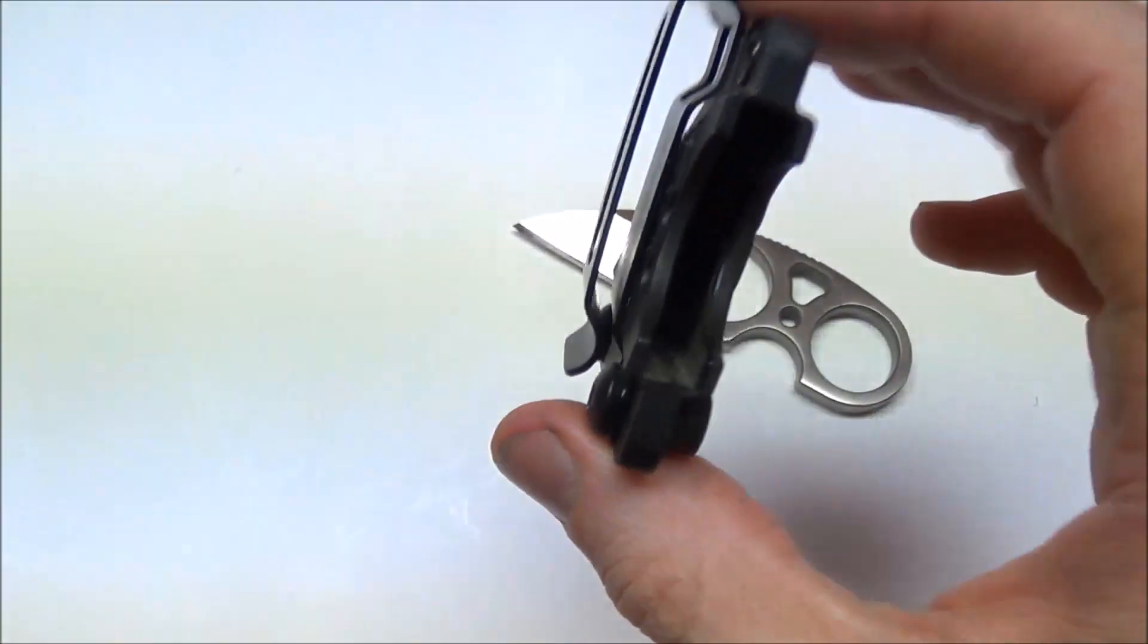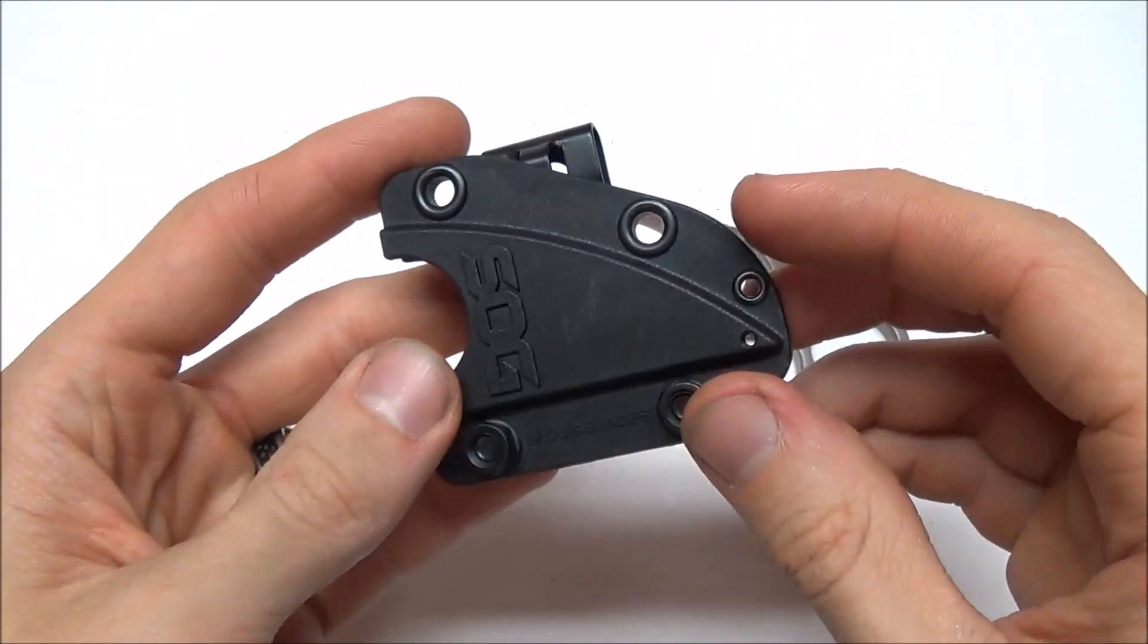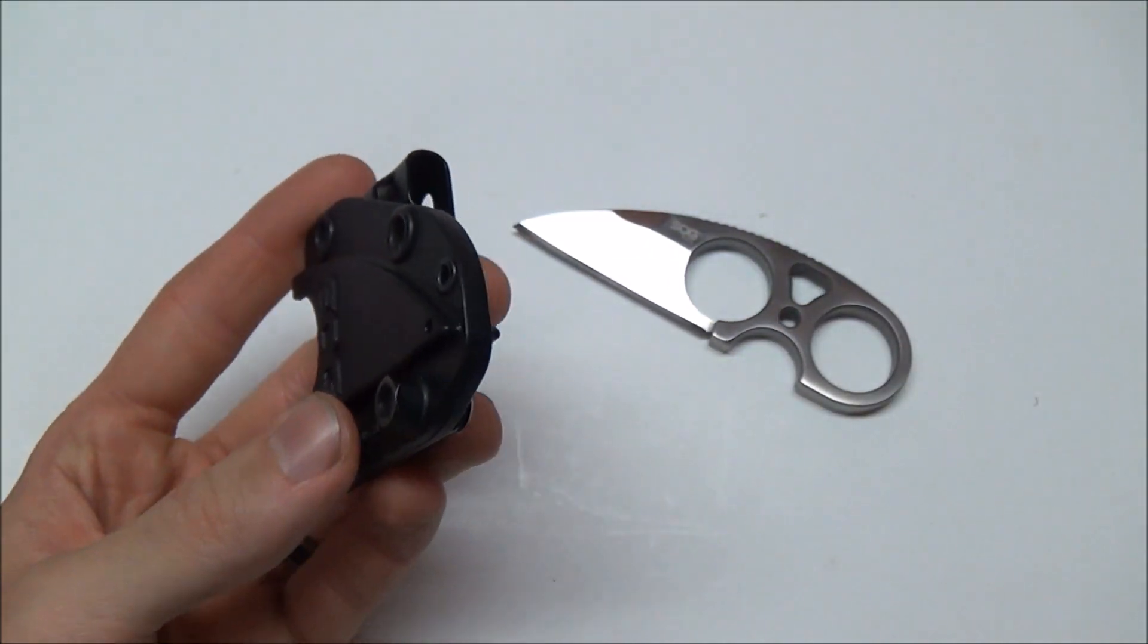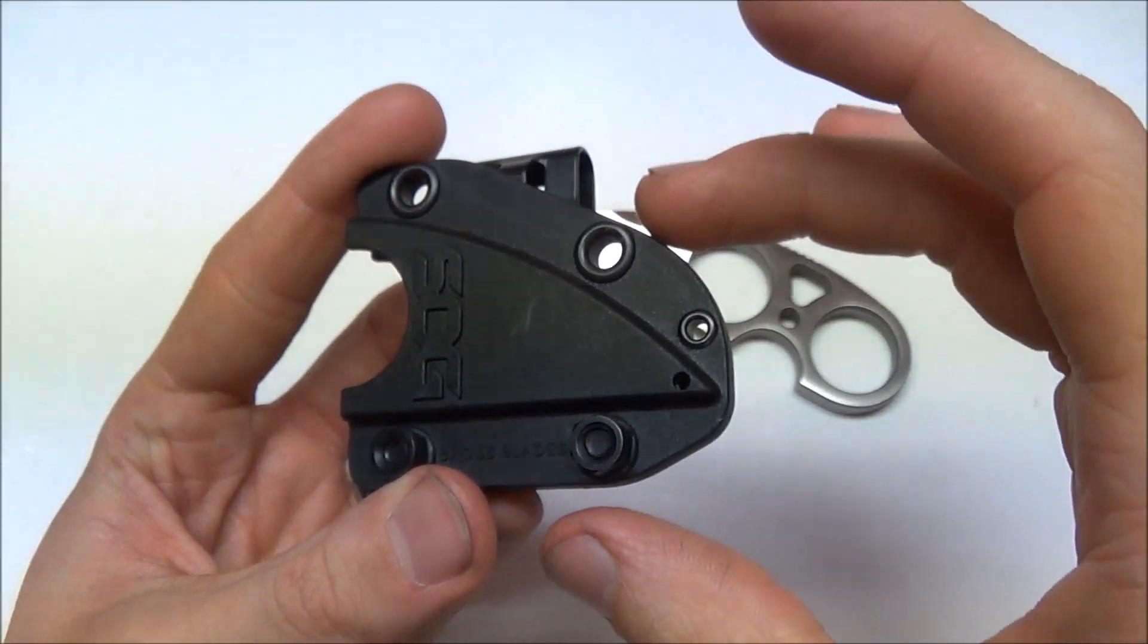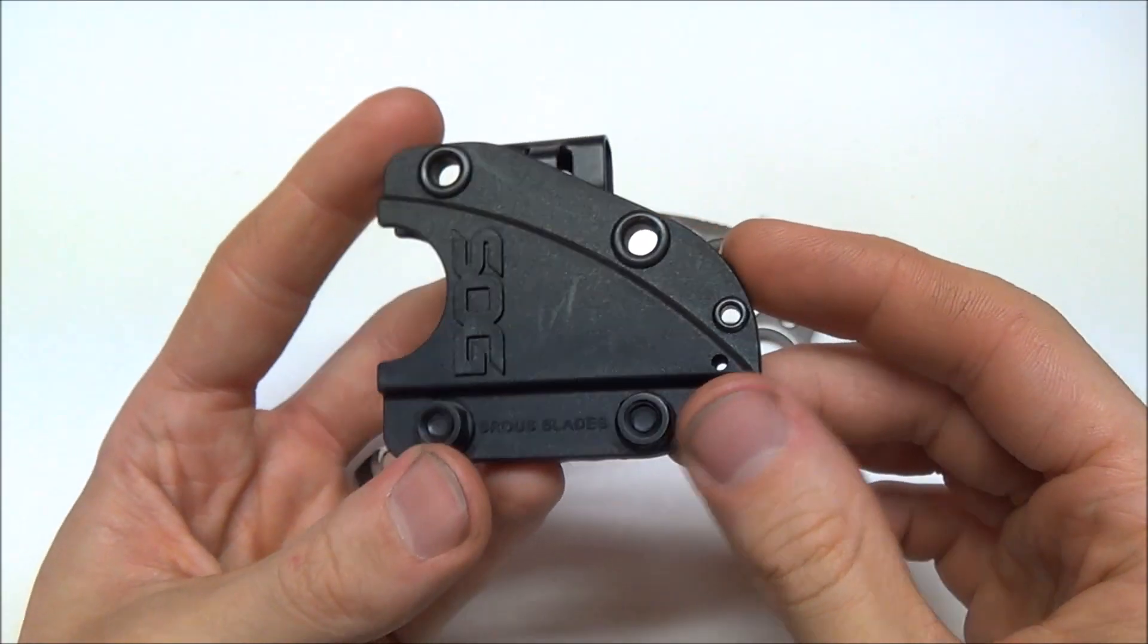But like I said, it is removable. So you can carry it on your belt, take it off, slip this in your pocket. Or it also comes with a steel bead chain and you can wear this around your neck as a neck knife.